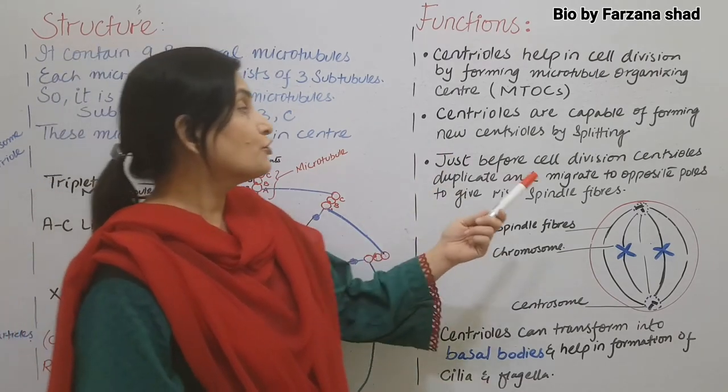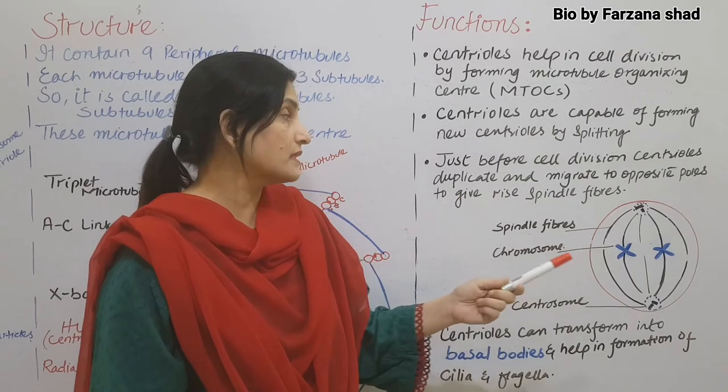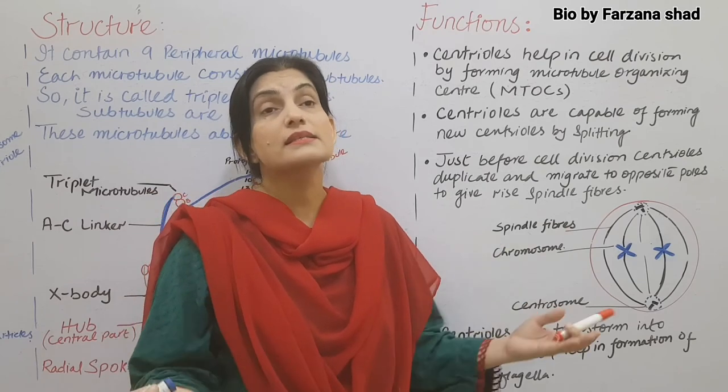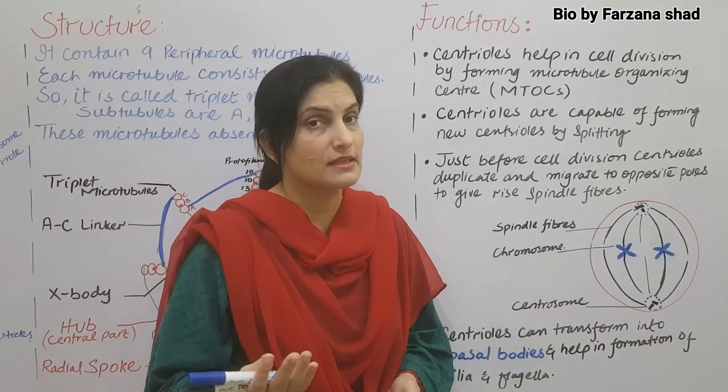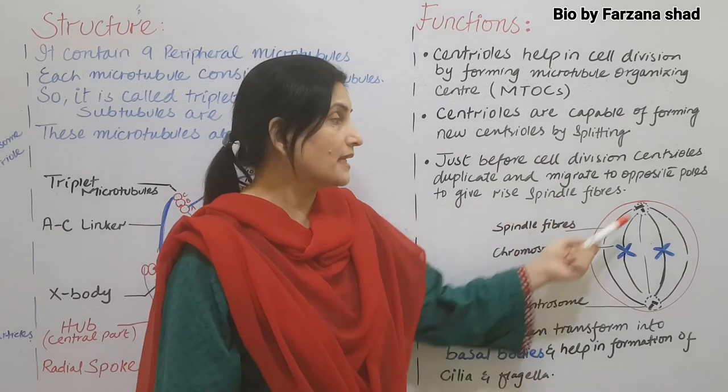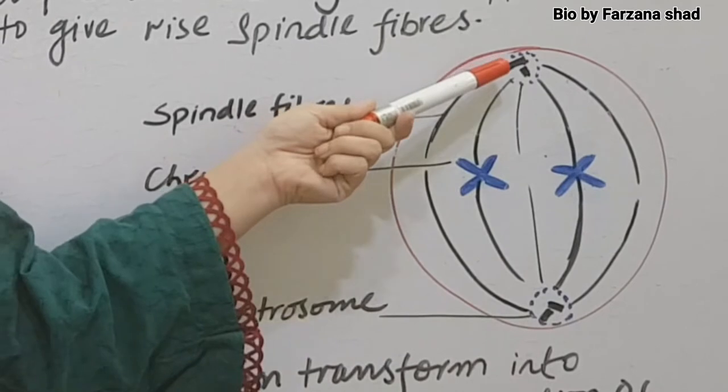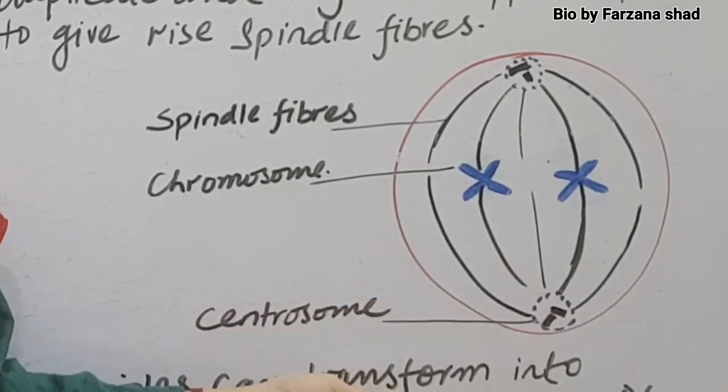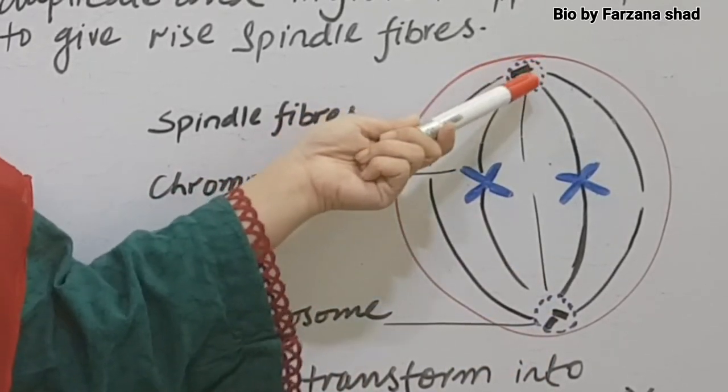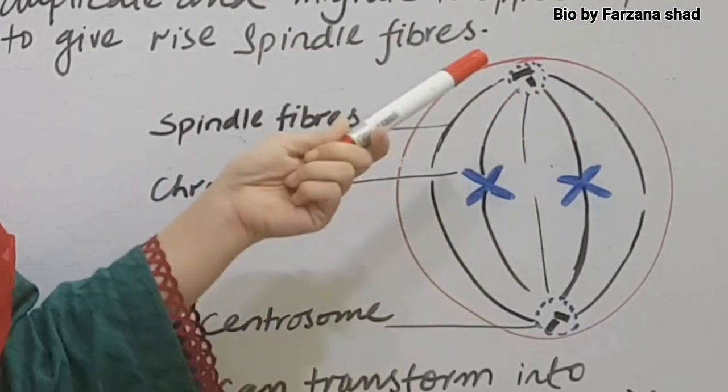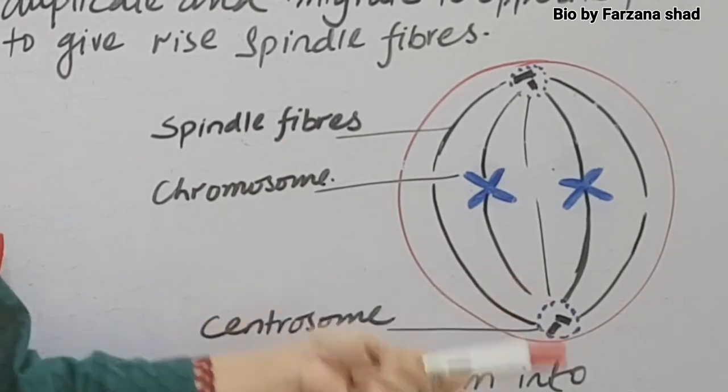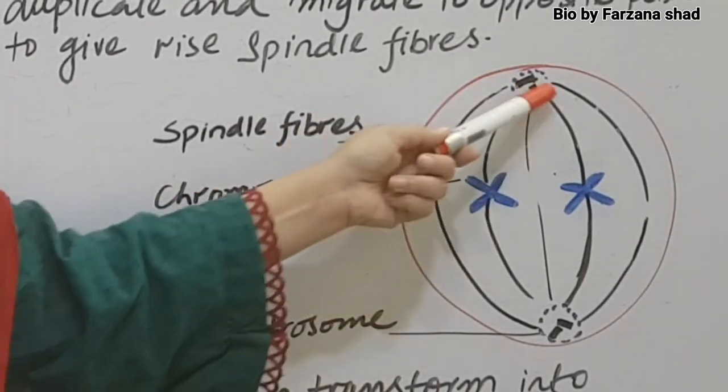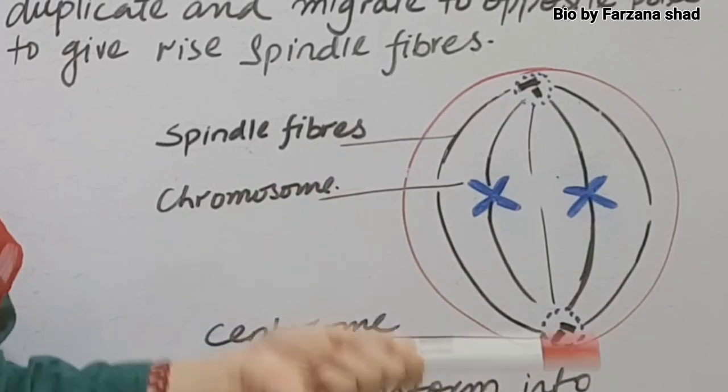Just before the cell division, centrioles duplicate and migrate to opposite poles to give rise to spindle fibers. In which phase does their duplication occur? This is done in interphase, specifically in the S phase. This is where the centrioles duplicate. You can see here when the cell divides, see one pole has a pair of centrioles present. This is another pole where a pair of centrioles is present. We discussed at the start that centriole and its neighboring area of cytoplasm together we call centrosome. Meaning the location of the centriole is the centrosome. From here spindle fiber formation occurs. These are the spindle fibers which help the cell to divide.